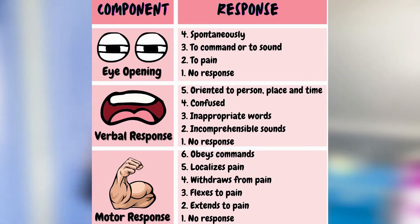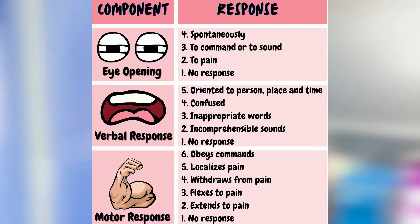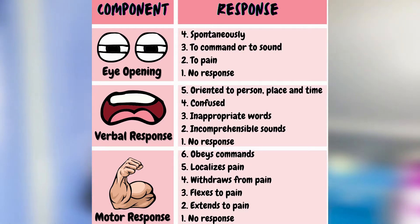The next component is the best verbal response, graded from 1 to 5. 5 being the highest, meaning the patient is oriented to person, place and time. 4 meaning the patient can make sentences but sounds confused. 3 meaning the patient can't make sentences but can form words; however, the words seem inappropriate to the situation. 2 meaning the patient can make sounds but they are incomprehensible. And 1, the lowest, meaning the patient does not say anything at all.